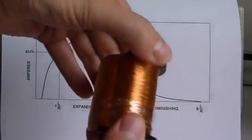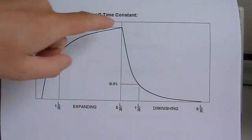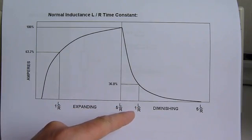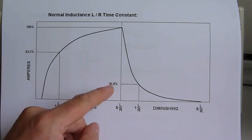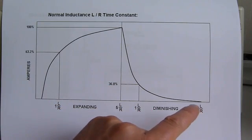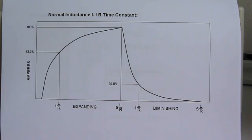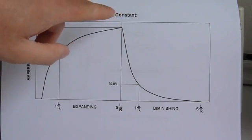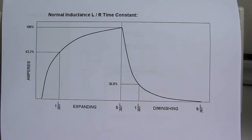When you remove the DC voltage, you see the opposite effect: in 1 L-over-R times you would expect the magnetic field to be diminished to 36.8%, and at 5 L-over-R times the total magnetic field is gone. This is the normal reaction when you hook a DC voltage to a normal inductor, and the second part shows what you would expect when you remove it from the DC voltage.